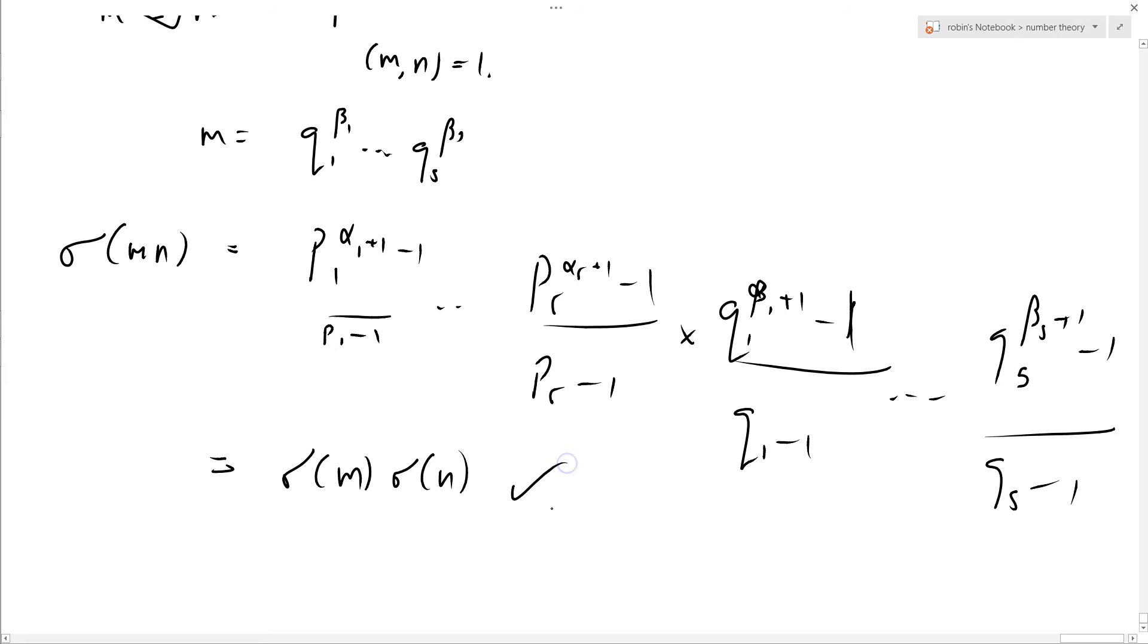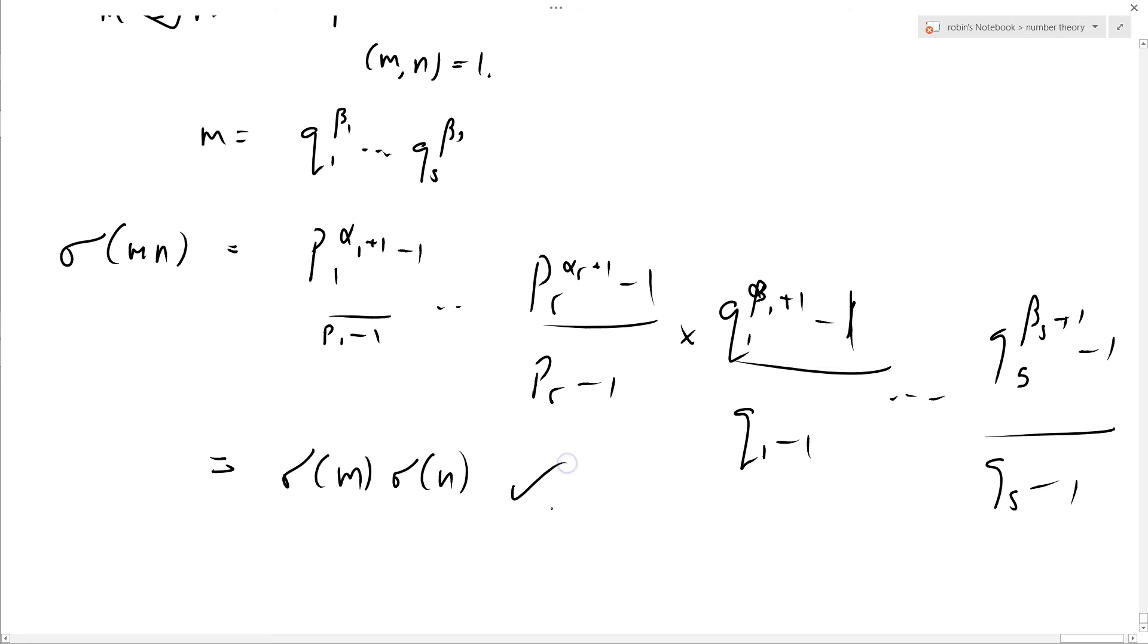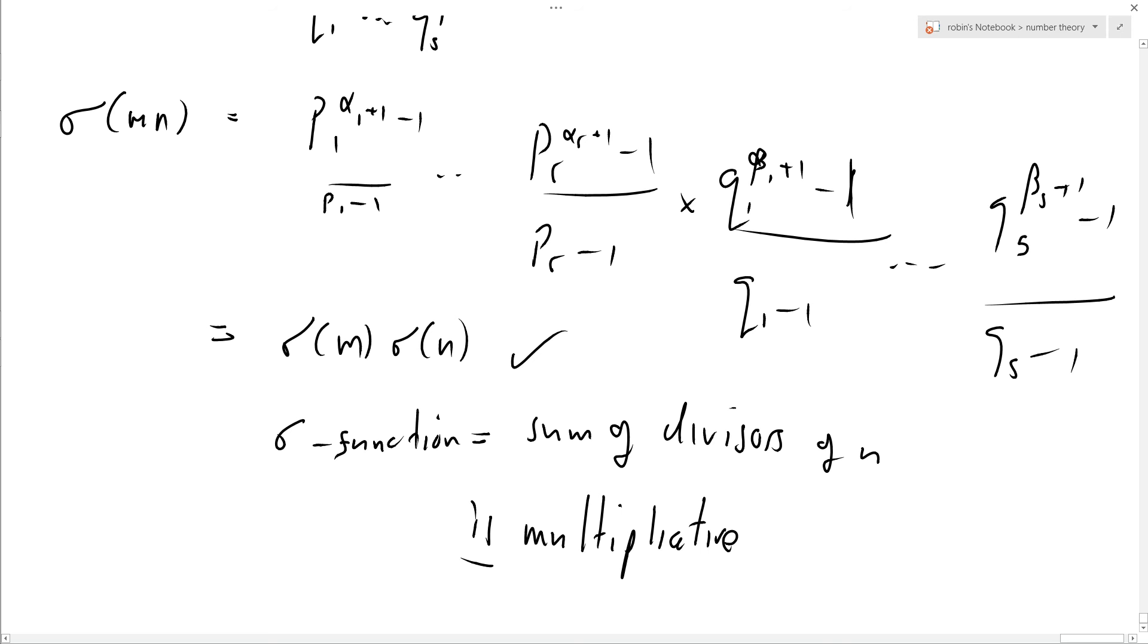equals sigma of m times sigma of n. So that checks out, and sigma is a multiplicative function. That's great. So the sigma function, which equals the sum of divisors of n, is multiplicative.